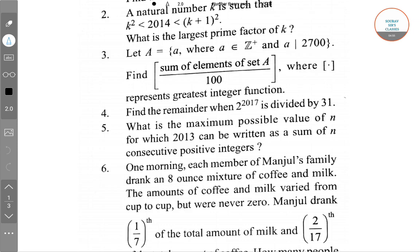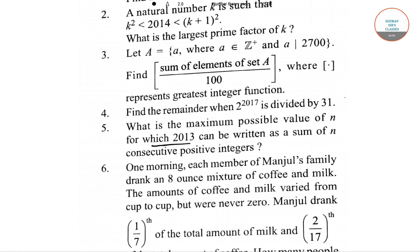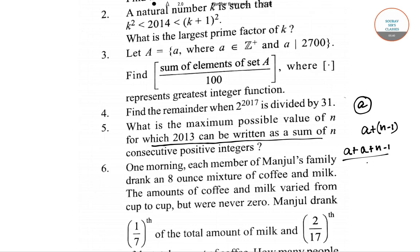Now question number five. Let the first number of the series in which 2013 is written as a sum of n consecutive numbers be a. So a is the first number and the nth term will be a plus n minus 1. Taking the average of the first and last terms and setting it equal to 2013, we get 2a plus n minus 1 equals 4026.